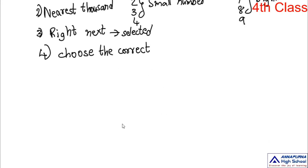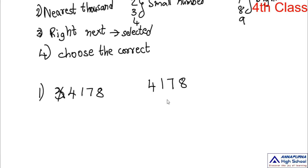Let's start with an example. The number I'm taking is 4,178. First step: identify the digit in thousands place. The digits are: 8 in ones place, 7 in tens place, 1 in hundreds place, and 4 in thousands place. So 4 is in the thousands place — step 1 is completed.